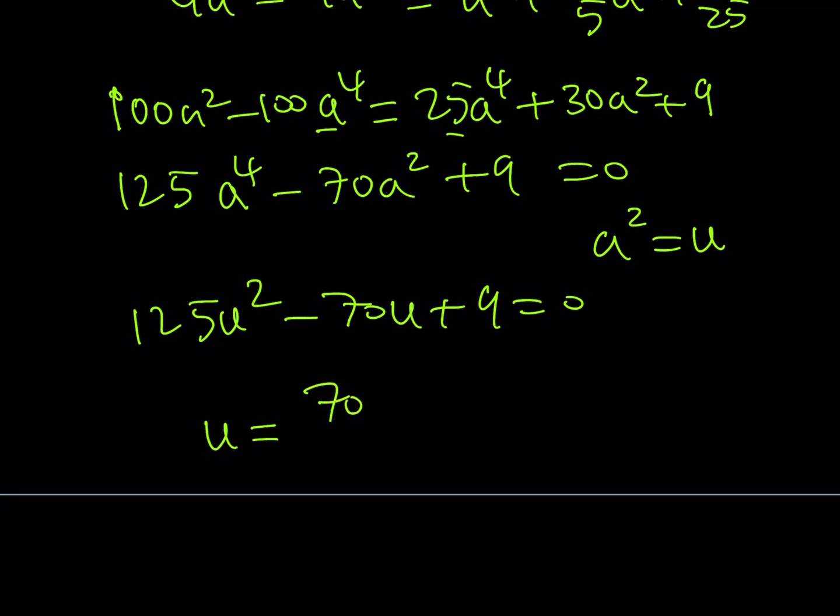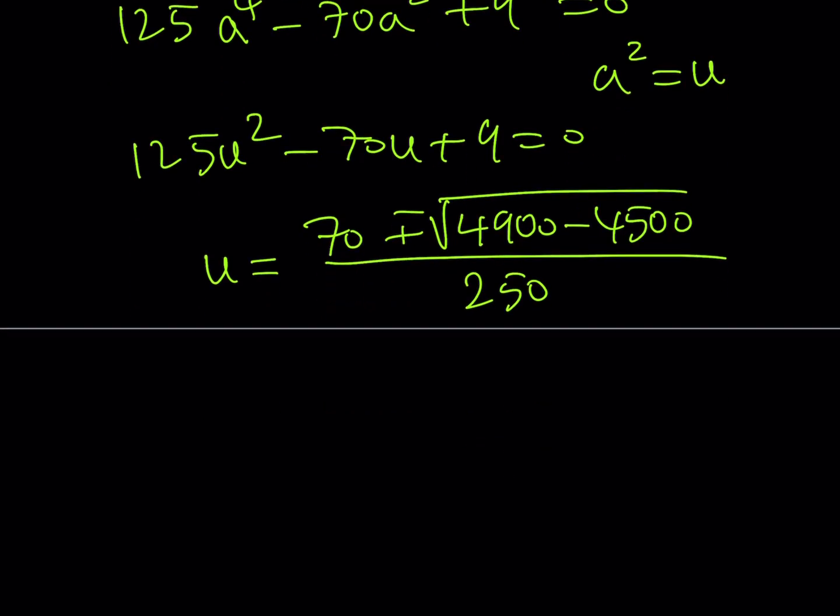Negative b plus minus the square root of b², so it's going to be 4900 - 4ac that's going to give us 4500. If you do the math, and then this is going to be 250. Let's see how we can simplify this. That's going to be 400 and the square root of that would be 20. From here what am I going to get?